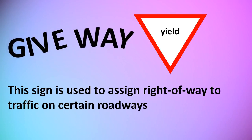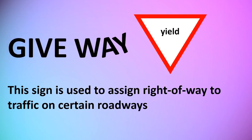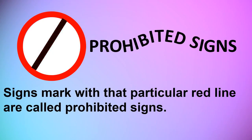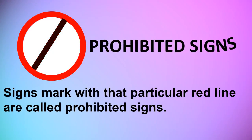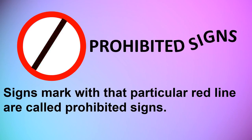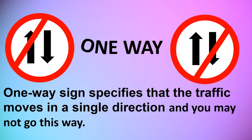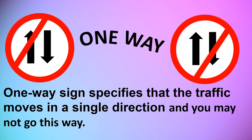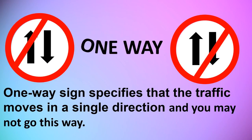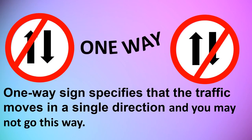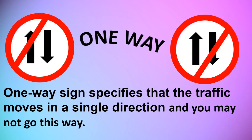Now we are moving to prohibited signs. Signs marked with that particular red line are called prohibited signs. One Way: this sign specifies that the traffic moves in a single direction and you may not go this way.